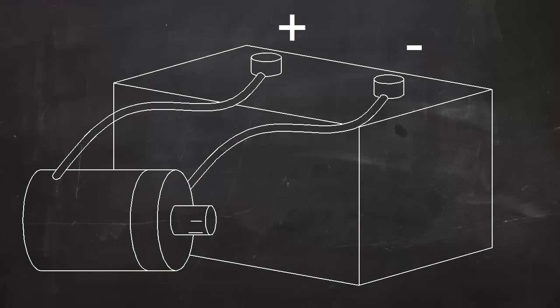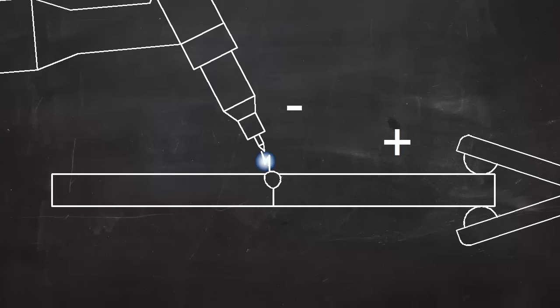For most metals, the current is direct current, or DC. DC is like the current flowing from a car battery. One wire is always the negative, and one is always the positive. In DC TIG welding, the electrode is usually negative, and the workpiece is positive.